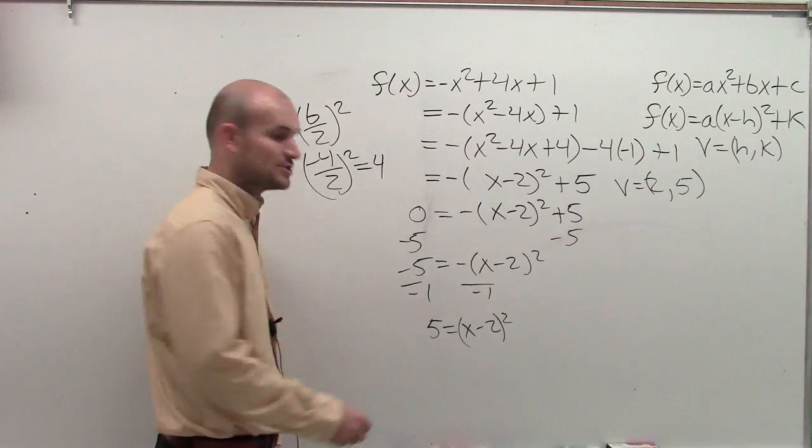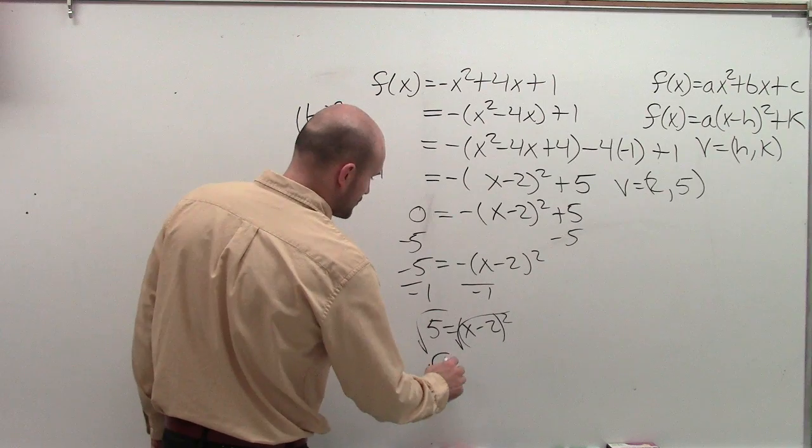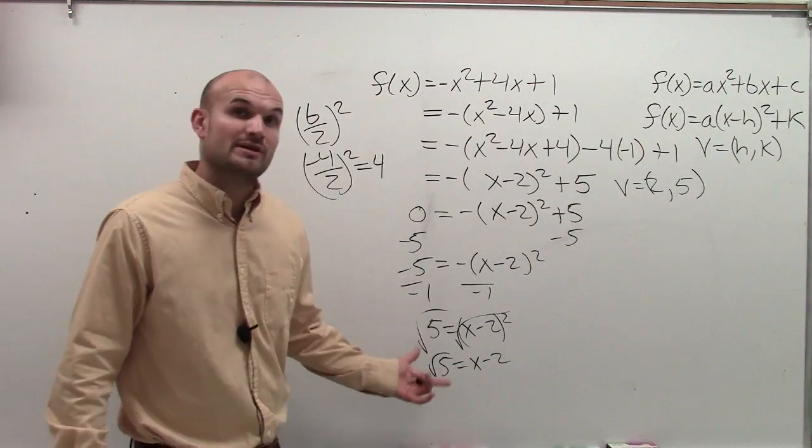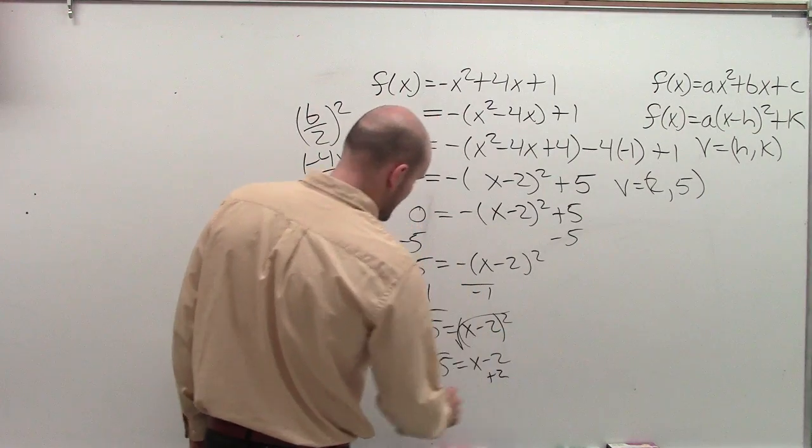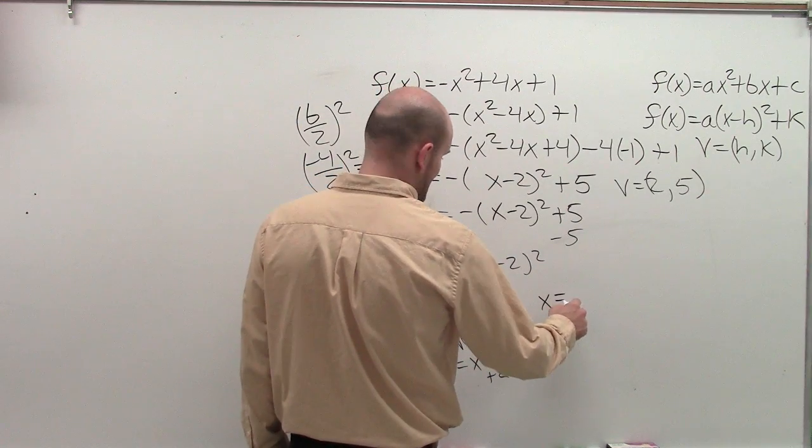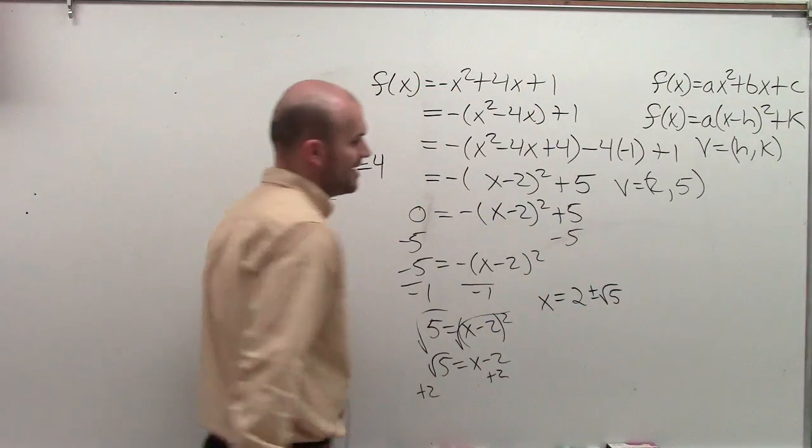And then I'm left with 5 equals x minus 2 squared. Now, to undo my squaring, I'm going to square root both sides. And I'm left with the square root of 5 equals x minus 2. And remember, when you introduce the square root, we have to take the positive and the negative. So I'm going to add 2 over here. And my final x-intercepts are going to be x equals 2 plus or minus the square root of 5.